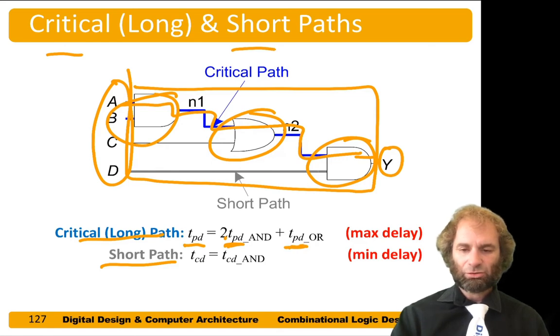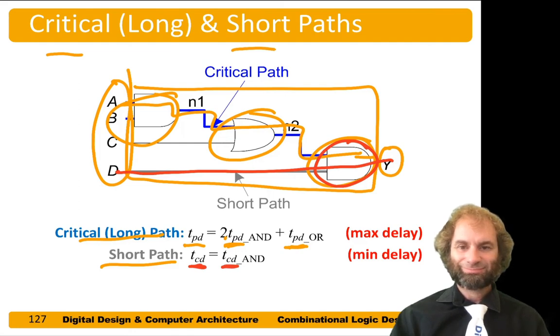On the other hand, the shortest path is from D to Y. It just goes through a single AND gate. So the contamination delay through the whole circuit is just the contamination delay of the AND gate. That's the shortest delay.